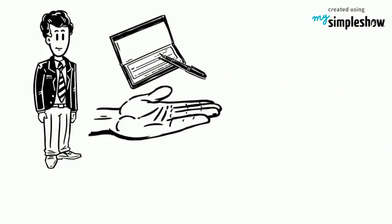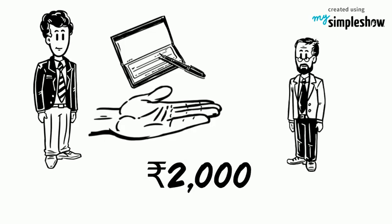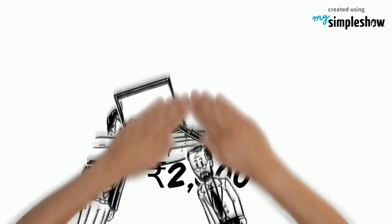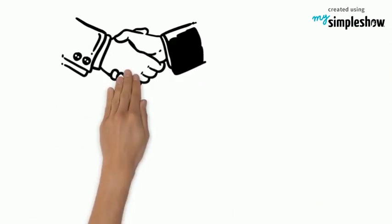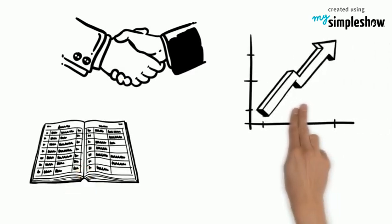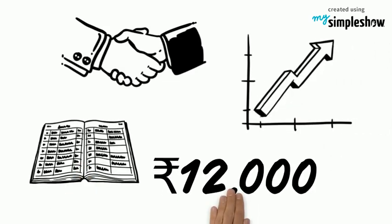Sam receives a check worth 2,000 rupees from Steve. He enters the transaction into his cash book which increases his cash book balance to 12,000 rupees.